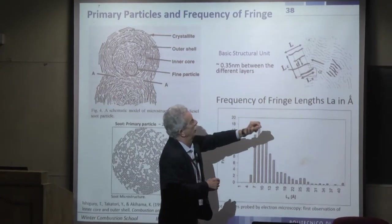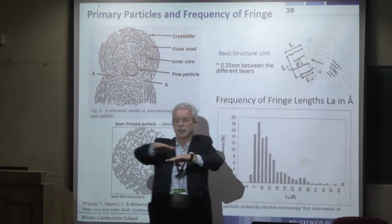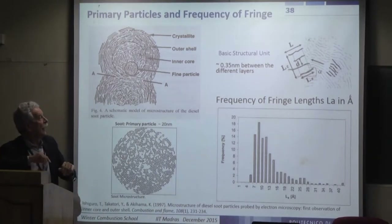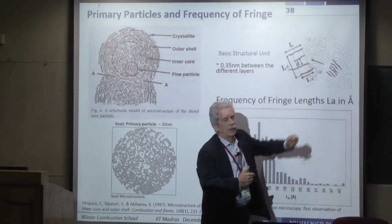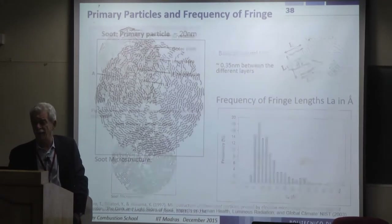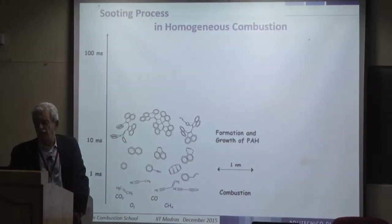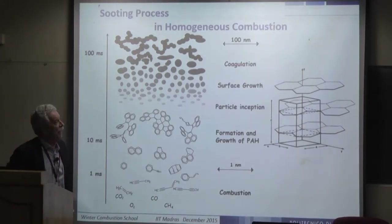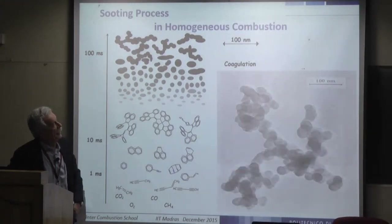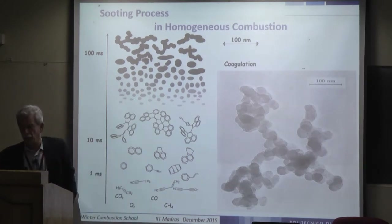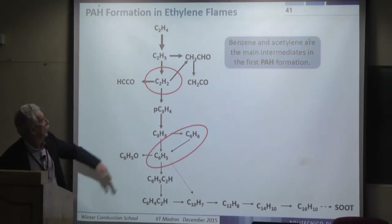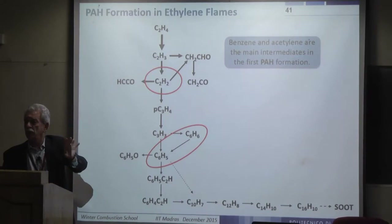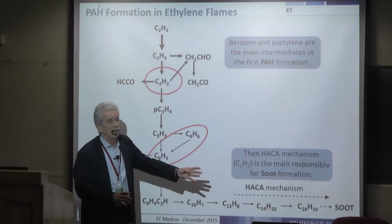Two structural parameters measurable in soot are the inter-layer distance (~0.35 nm) and the fringe length describing how aromatic layers are packed. The polyaromatics are first compacted, then organized into primary particles, and finally aggregate into soot. Key chemical steps are the chemistry of acetylene and benzene as precursors, followed by the HACA mechanism — Hydrogen Abstraction Carbon Addition — proposed by Frenklach and Hai Wang.